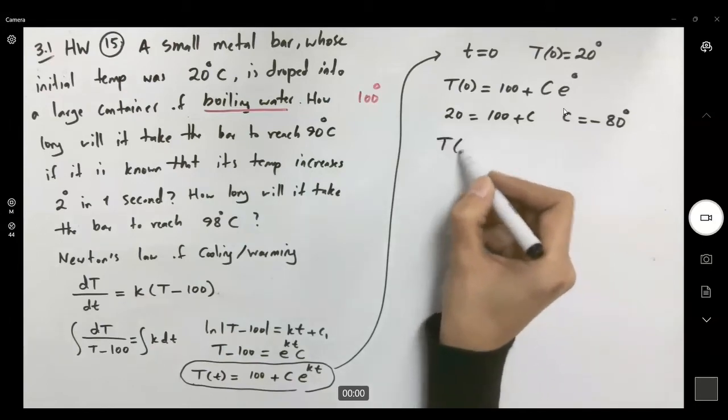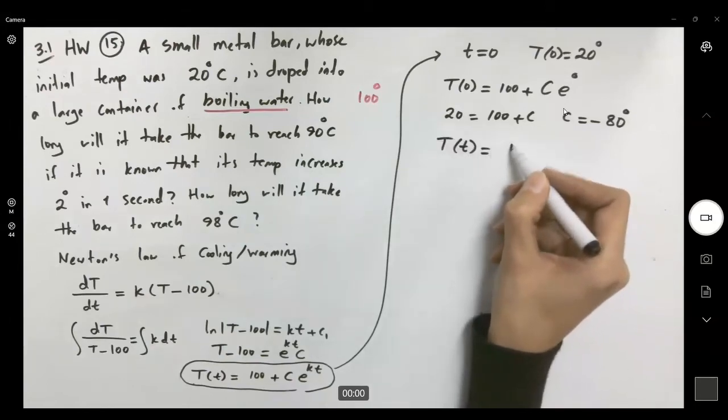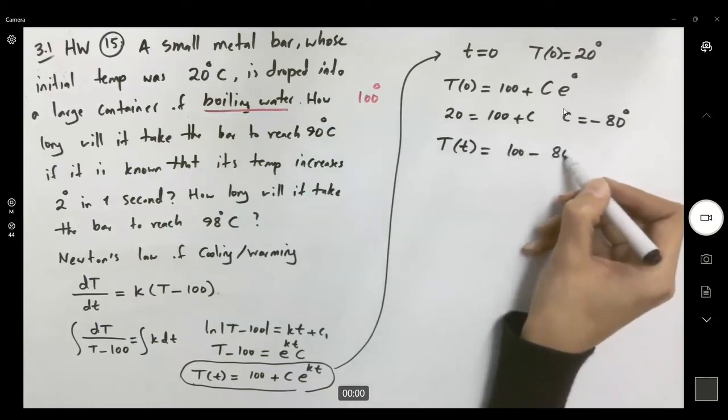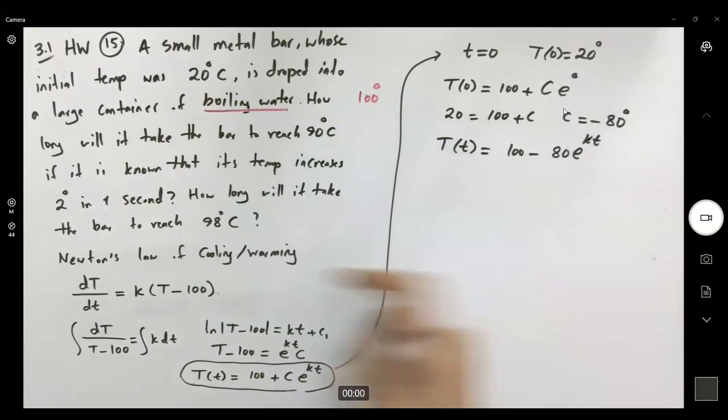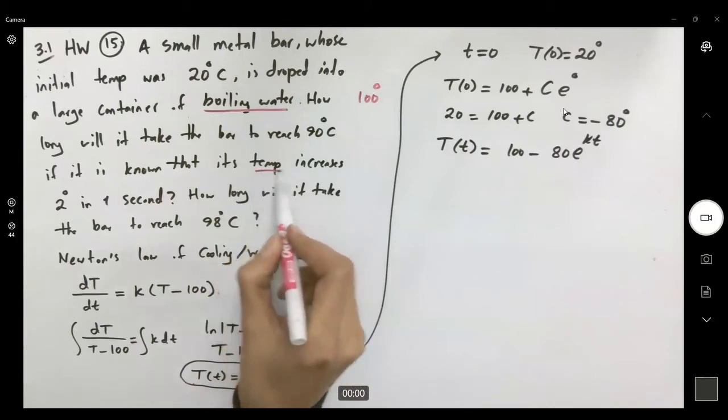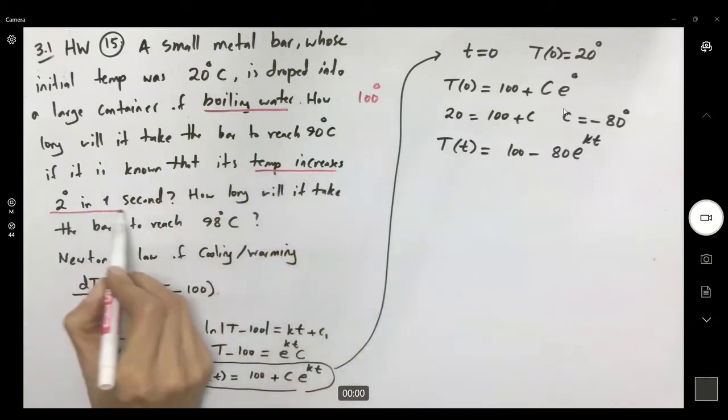So our model becomes t of t equals 100 minus 80 e to kt. What else do we have here? We know that the temperature increases 2 degrees in one second.